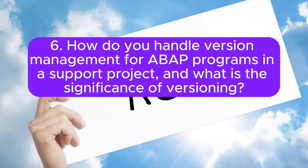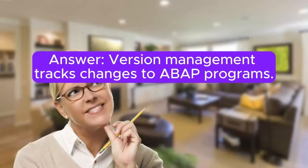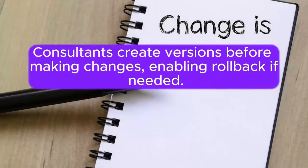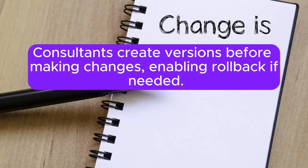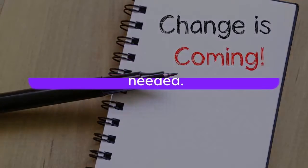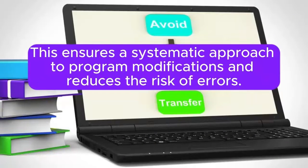Question 6: How do you handle version management for ABAP programs in a support project, and what is the significance of versioning? Answer: Version management tracks changes to ABAP programs. Consultants create versions before making changes, enabling rollback if needed. This ensures a systematic approach to program modifications and reduces the risk of errors.